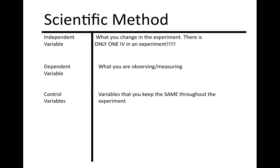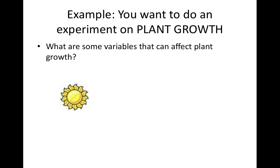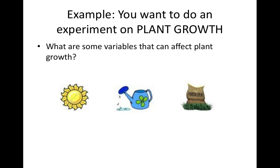Let's say you want to do an experiment on plant growth. There are some variables that can affect plant growth. What do you think they are? The sun—plants need sun, plants need water, and plants also need nutrients, like a bag of fertilizer. These are all potential independent variables. Now remember, you can only choose one. You can't change all three because if you changed all three, then you wouldn't know which factor is affecting your growth of your plant.